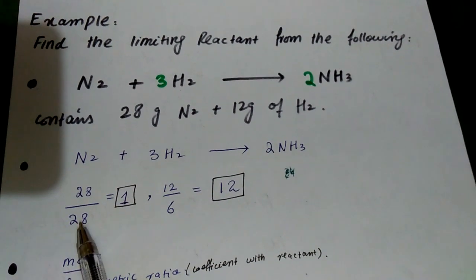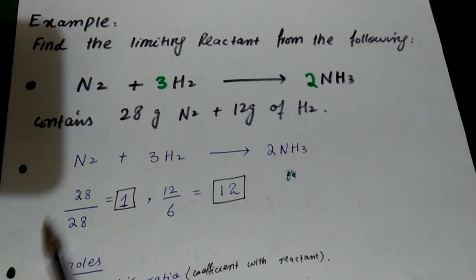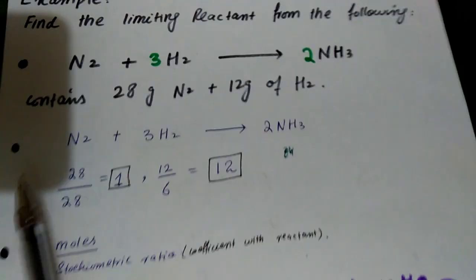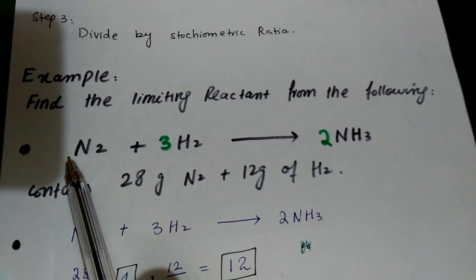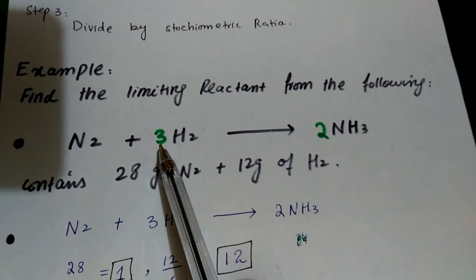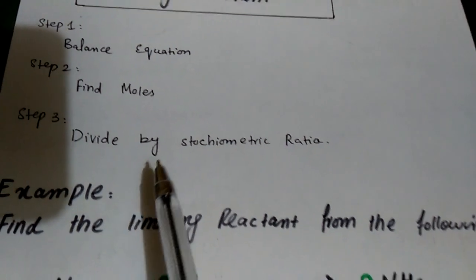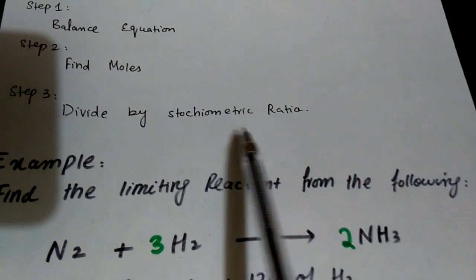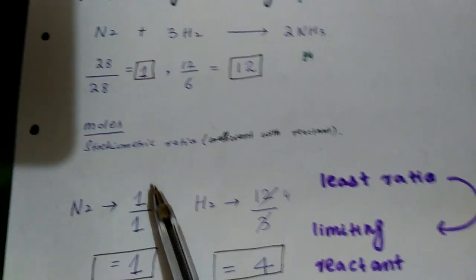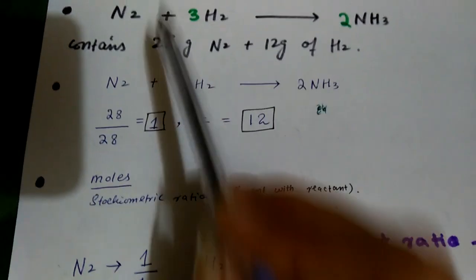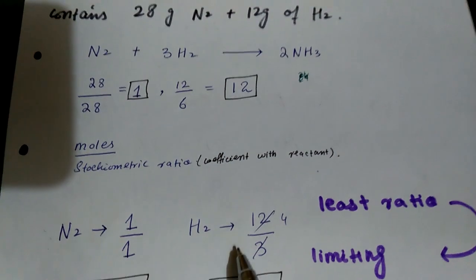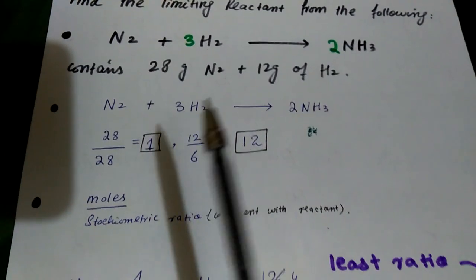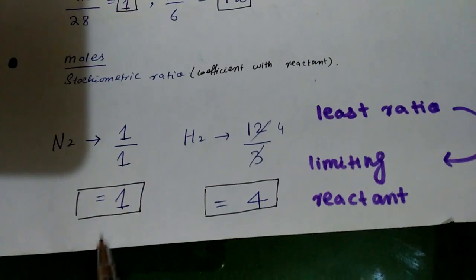For the second step, we find the number of moles using mass divided by molar mass. Then comes the stoichiometric ratio, which is the coefficient of each substance in the balanced equation. For the third step, we divide the number of moles by the stoichiometric ratio — for example, dividing by 1 for one substance and by 4 for hydrogen.